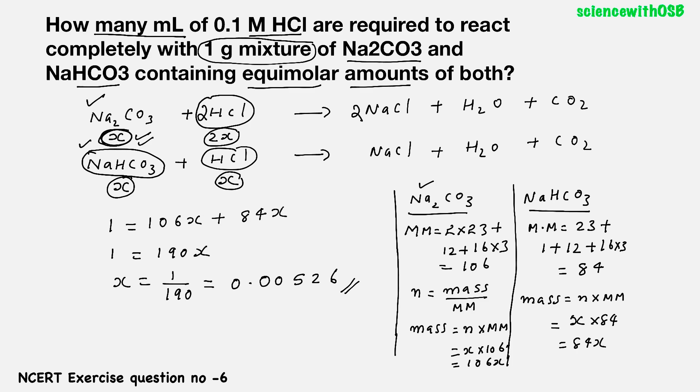Now, what is the total number of moles of HCl required to react completely with Na2CO3 and NaHCO3? It is clear from the equation. It is 2x for Na2CO3 and x for NaHCO3. So 2x plus x. So what is that? 3x. And you know the x value. What is that? 3 into 0.00526. On calculating, you will be getting like 0.01578. So we got the total number of moles of HCl required for reacting completely with 1 gram mixture of Na2CO3 and NaHCO3.